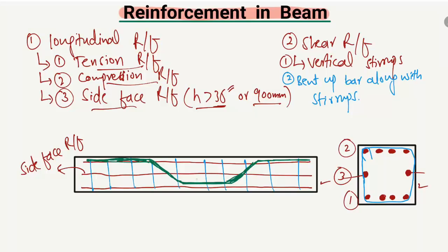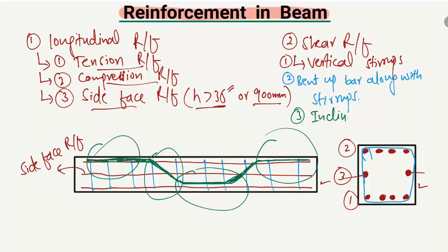At the mid portion, the bent up bars are used to take the tensile stresses. At the inclined regions, they are used to resist the shear. At the end regions, they act as compression reinforcement, and sometimes at the end they also take the negative bending moment in the beam. The third type of shear reinforcement is the inclined stirrups, where stirrups are provided inclined in order to take the shear stresses or shear load.